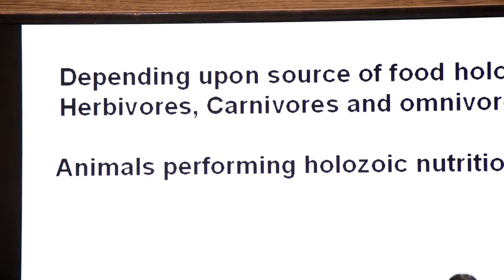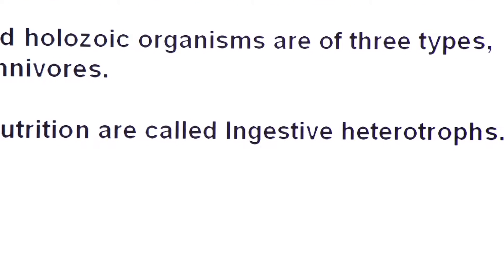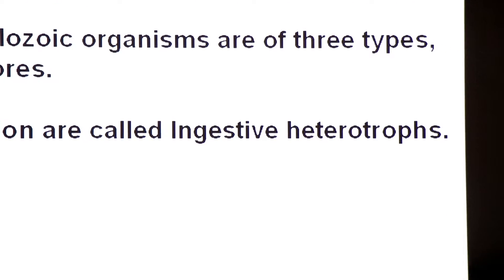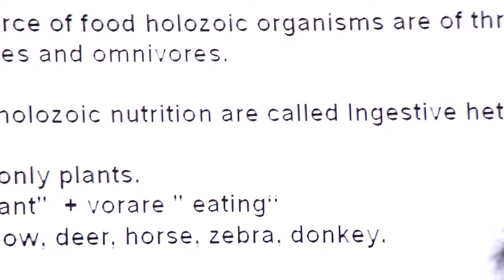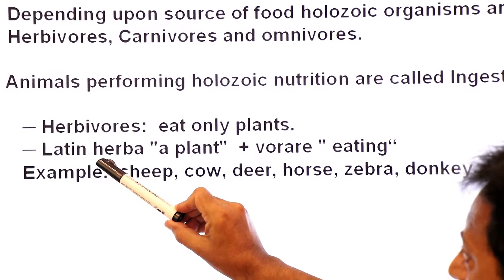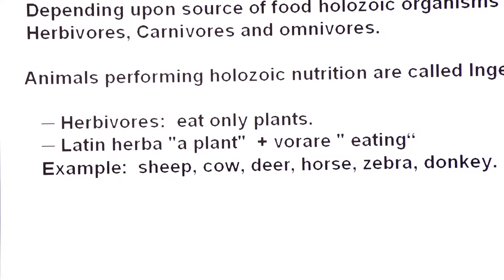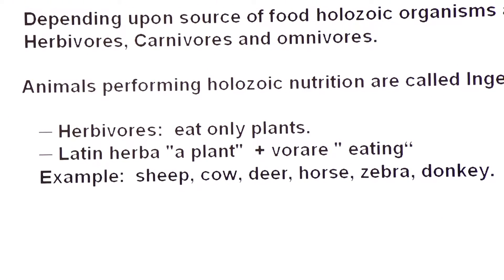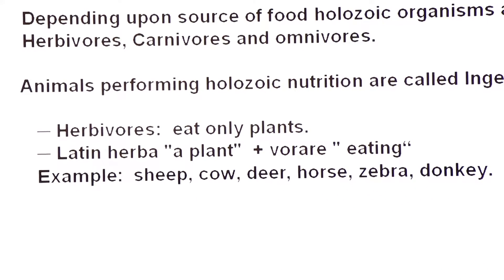Animals performing holozoic nutrition are called ingestive heterotrophs. Ingestive heterotrophs may be herbivores, carnivores or omnivores. Herbivores eat only plants. It comes from Latin language - herba means a plant, vorare means eating. Examples of herbivores: sheep, cow, deer, horse, zebra and donkey.